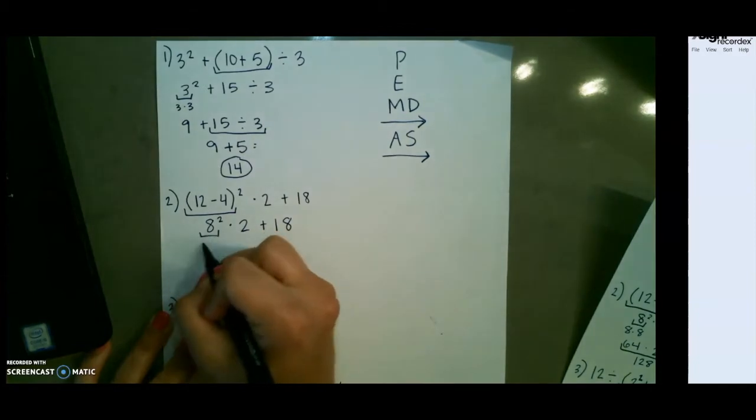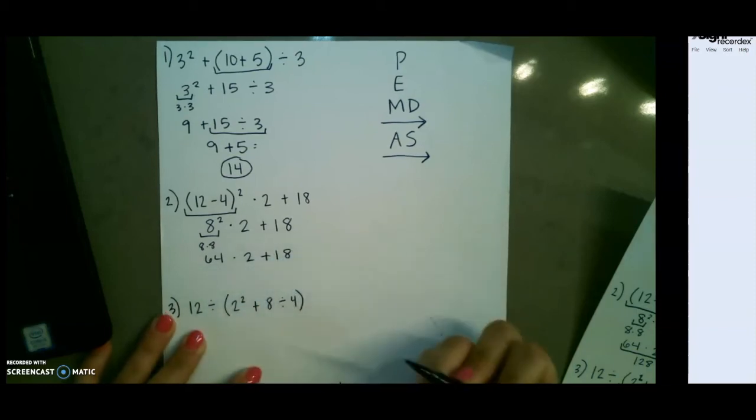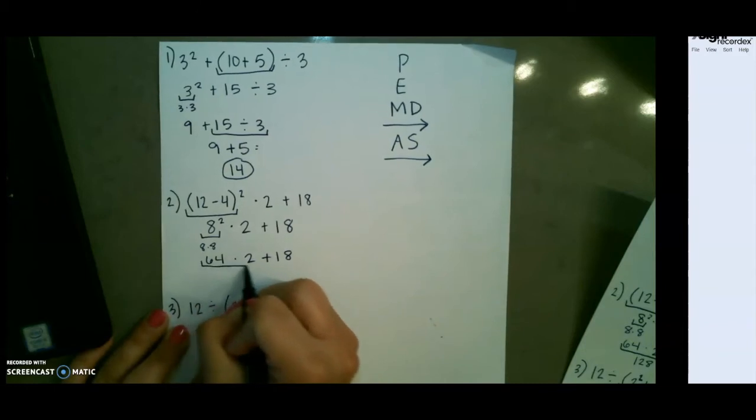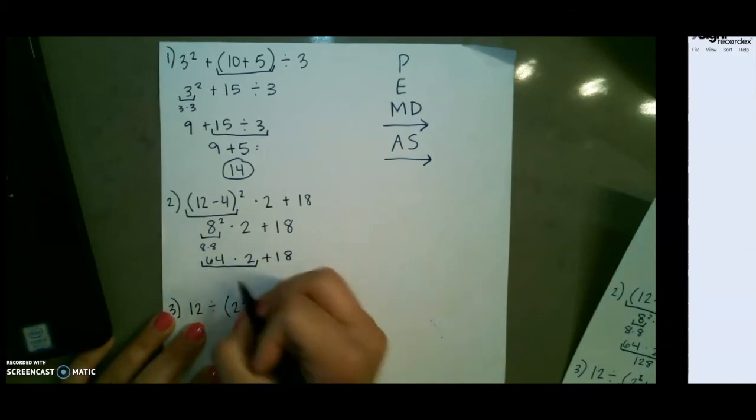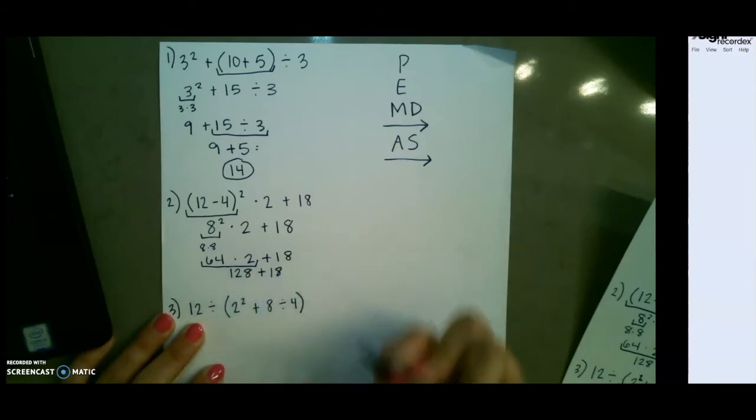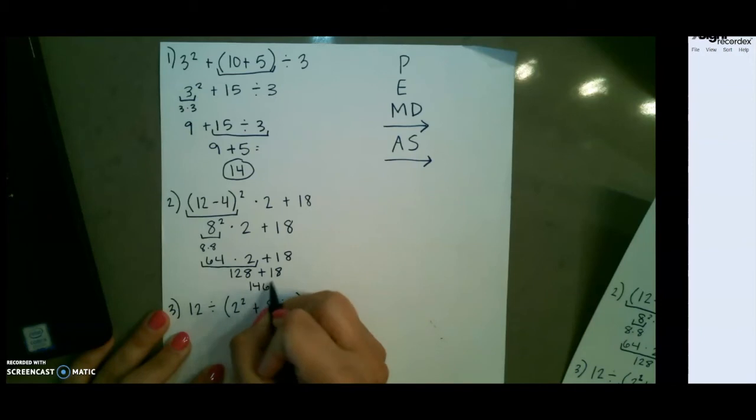Now we will do the exponent. 8 times 8 is 64. Next, we have multiplication and division, so we complete the multiplication. 64 times 2 is 128 plus 18, and our final answer would give us 146.